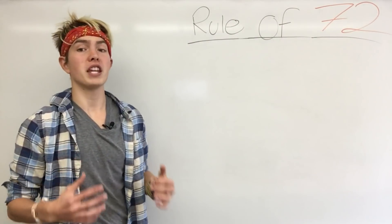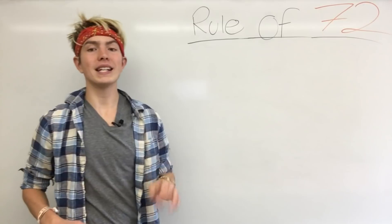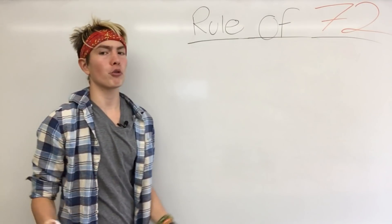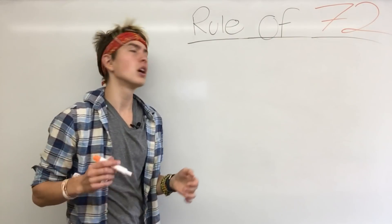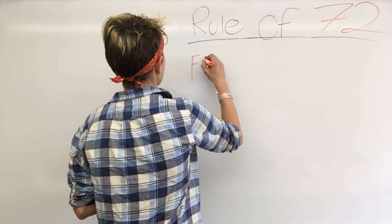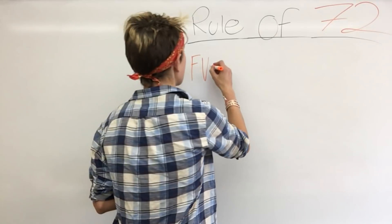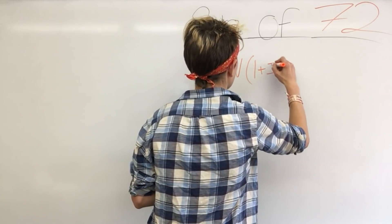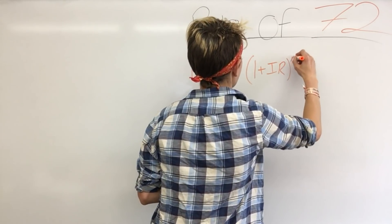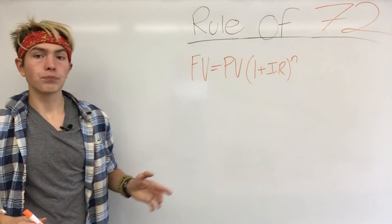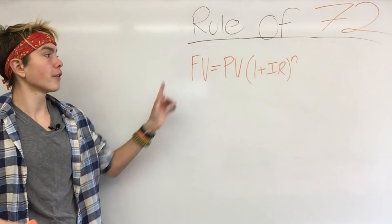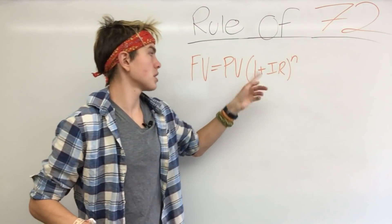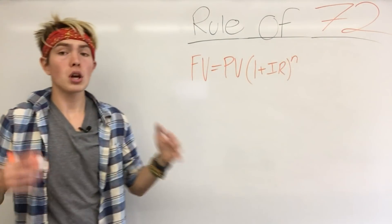We're going to start with the time value of money formula, which is a crucial formula you'll need in your finances. It's the basic compounding interest formula. We've got FV — future value — equals the present value of your money multiplied by one plus the interest rate, raised to the power of n, where n is how many periods there are. Future value equals how much your money is worth right now multiplied by one plus the interest rate, to the power of how many periods.